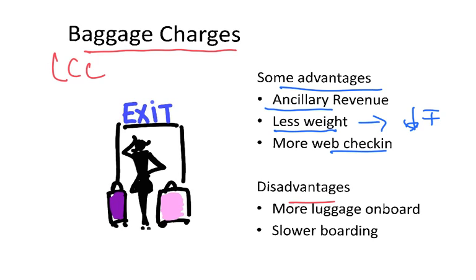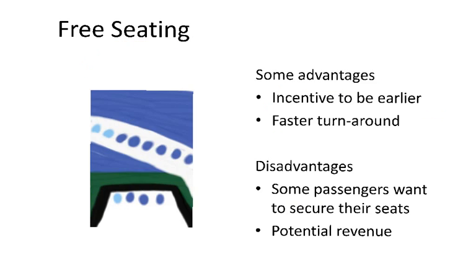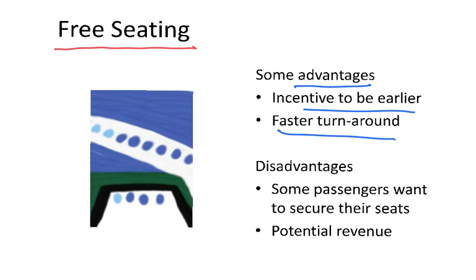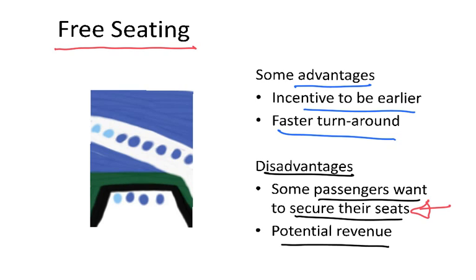One disadvantage of charging for baggage is that passengers bring more luggage on board, which can create a lack of overhead space and cause slower boarding or small delays. Another feature started by low-cost carriers was free seating — you board and sit in the first available seat. This incentivizes earlier boarding and leads to faster turnaround times. The disadvantage is that some passengers want to secure a specific seat. As a result, some low-cost carriers have adjusted their policy to allow paid seat selection, generating additional revenue.